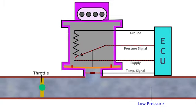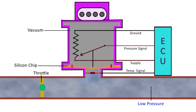For measuring the pressure, we have a silicon chip which is mounted in a chamber. On one side we have the vacuum and the other side is exposed to the intake manifold pressure.